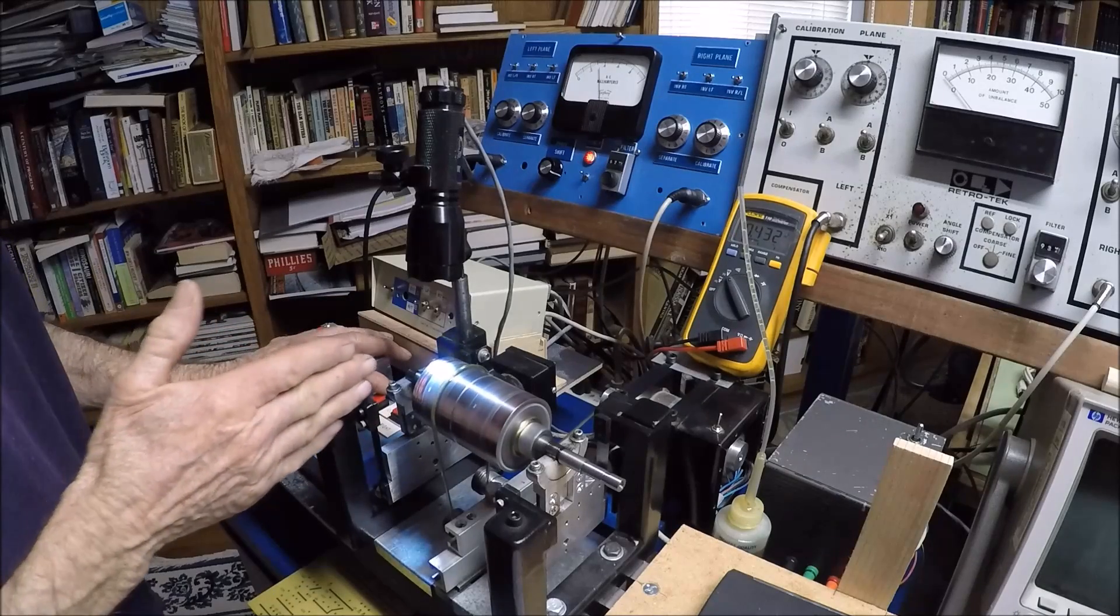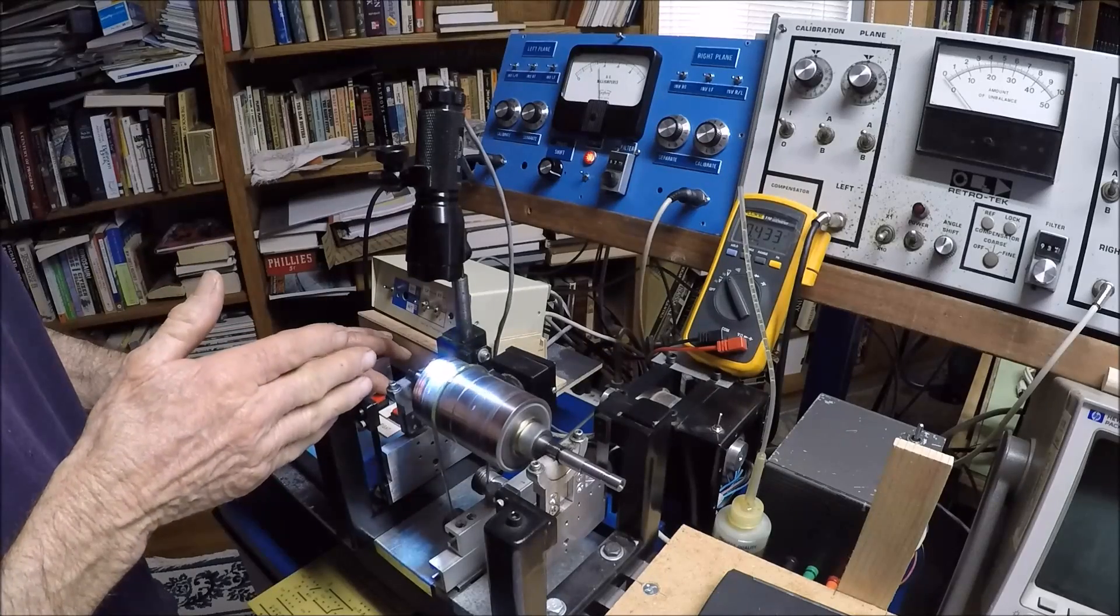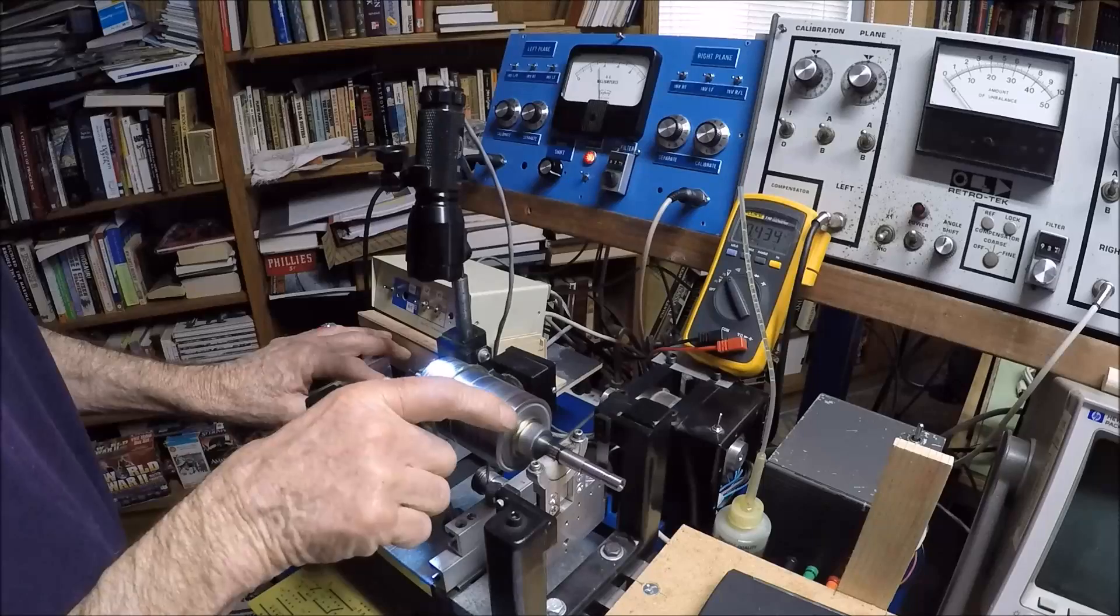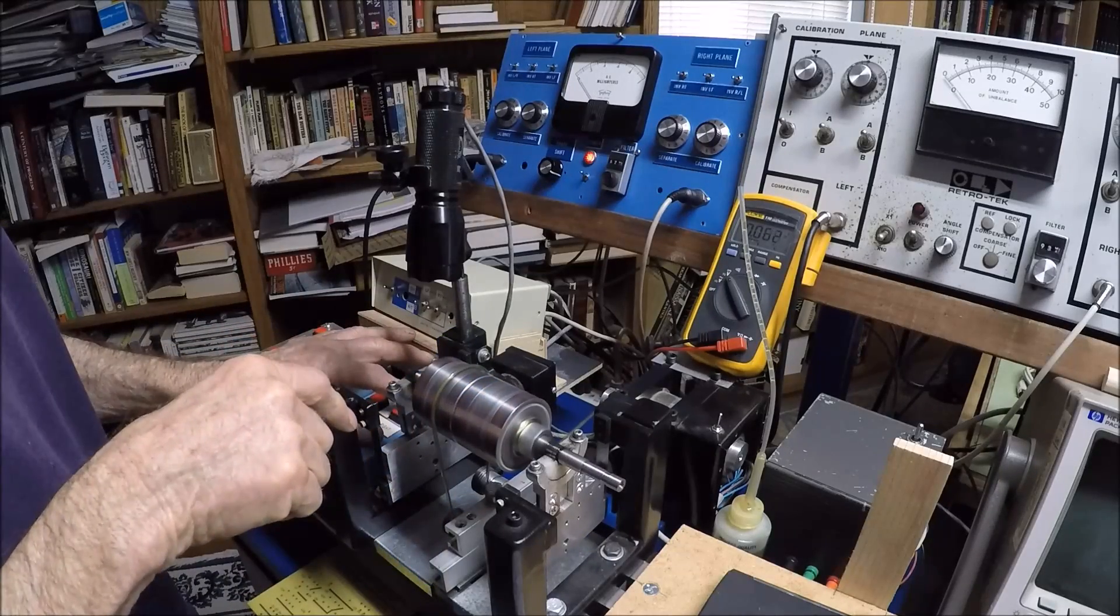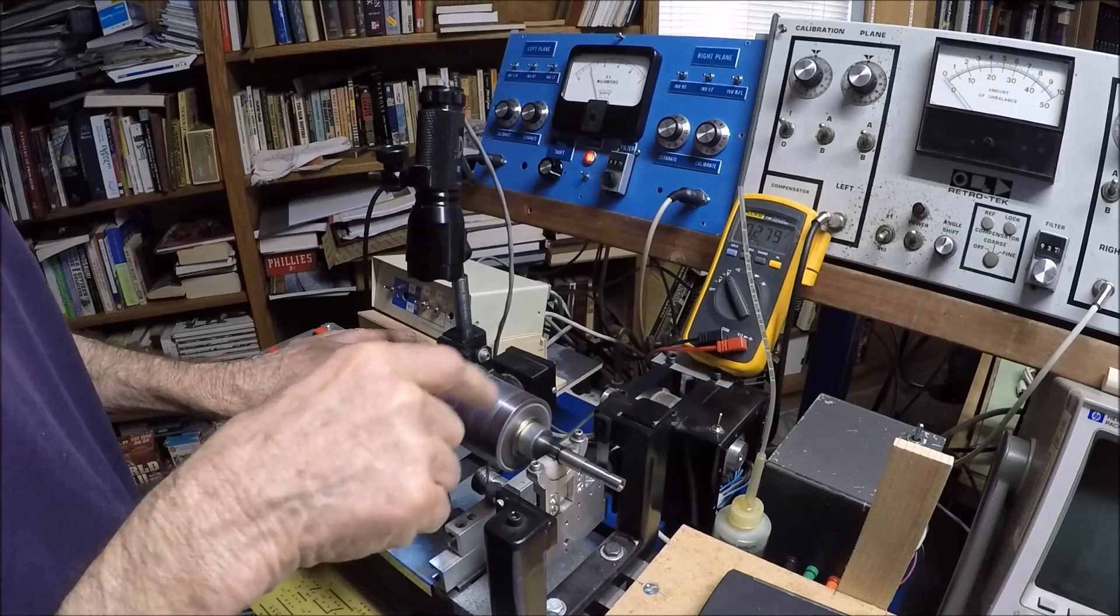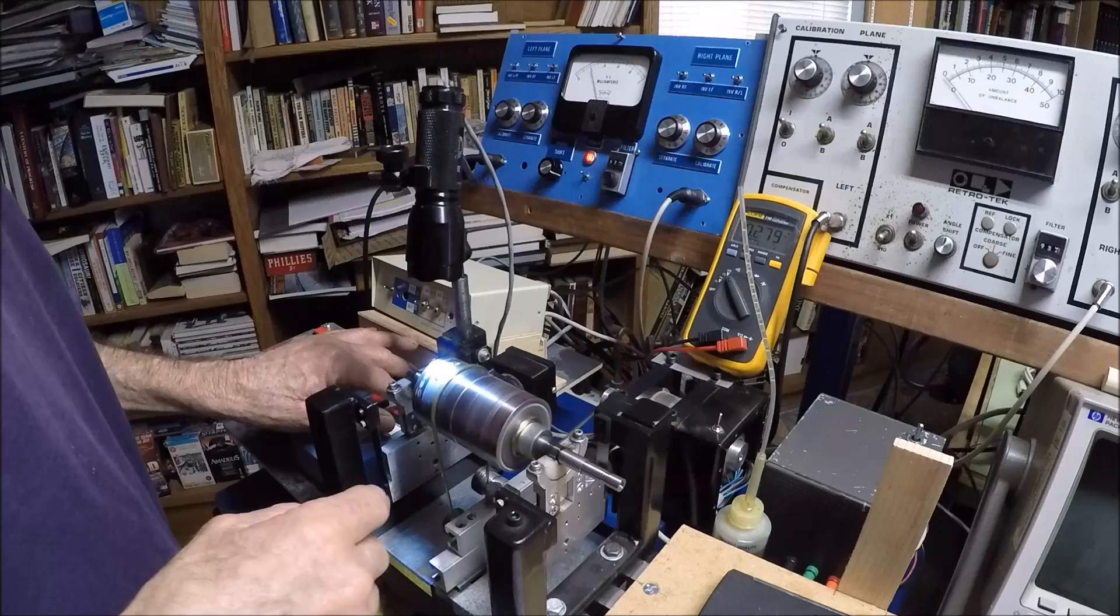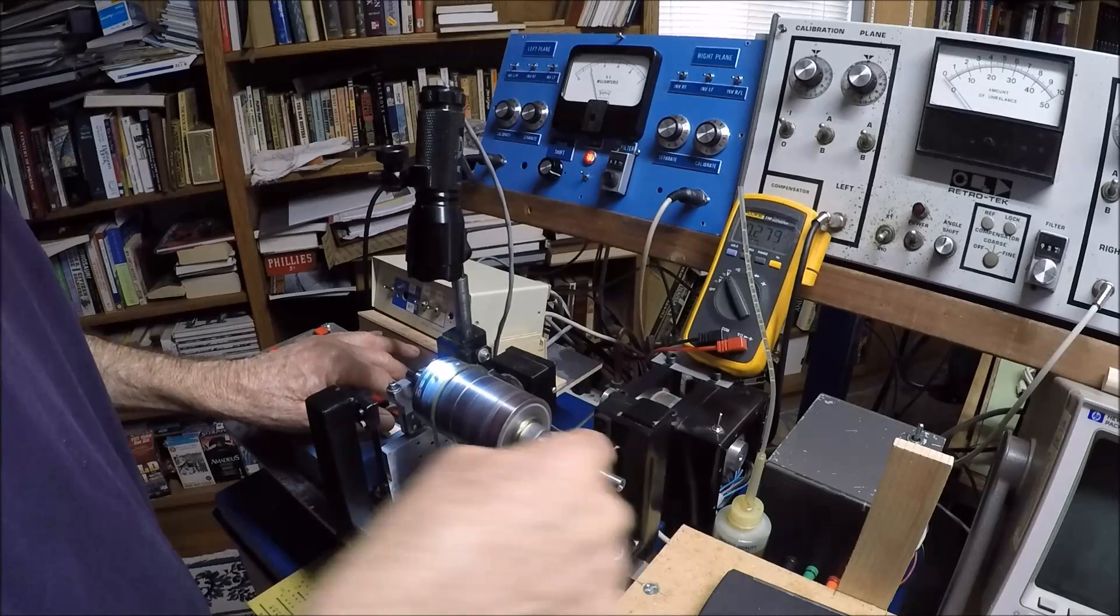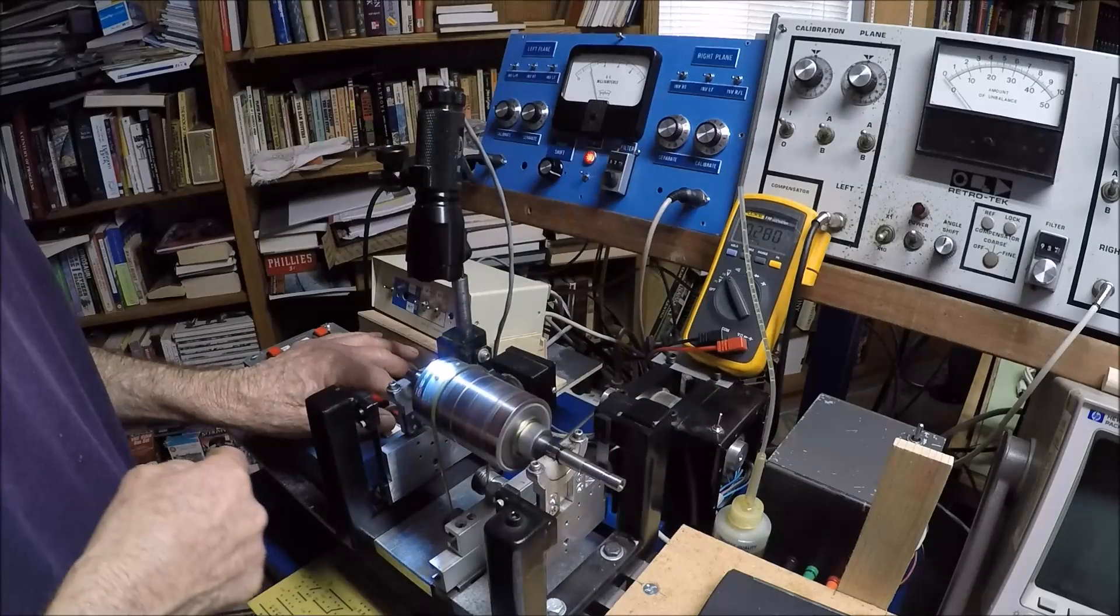I have selected the left plane. That is, the pickups are mounted right along the bearing. And so I'm reading the result of the unbalance in the rotor as it is measured in the left-hand plane. If I go over here and select the right, we have a lower meter reading by about 1. We are again reading the effect of the unbalance in the right-hand plane as picked up by the pickup.